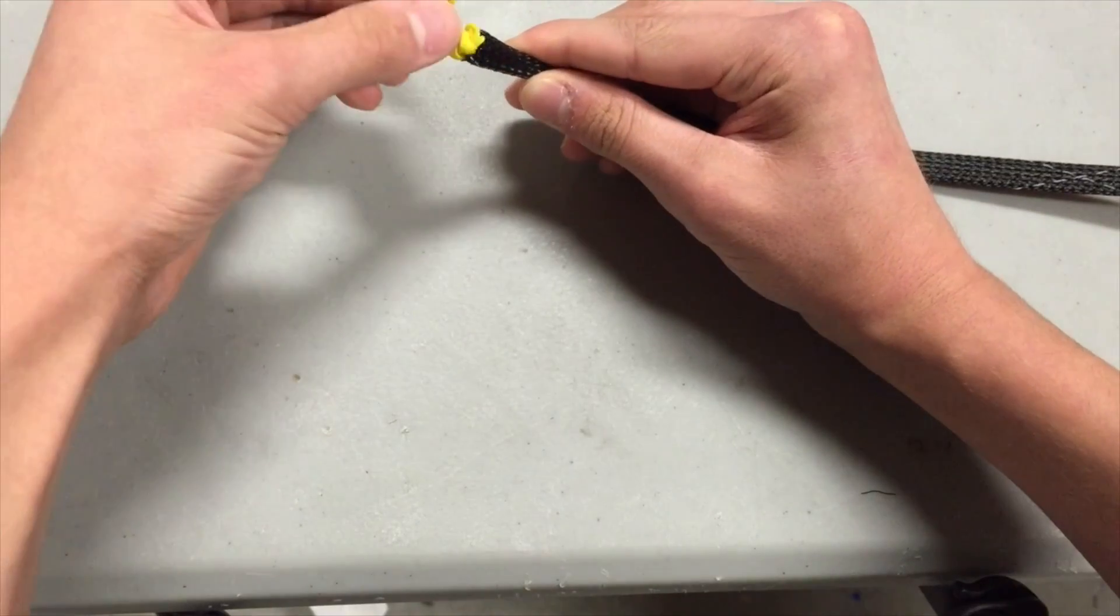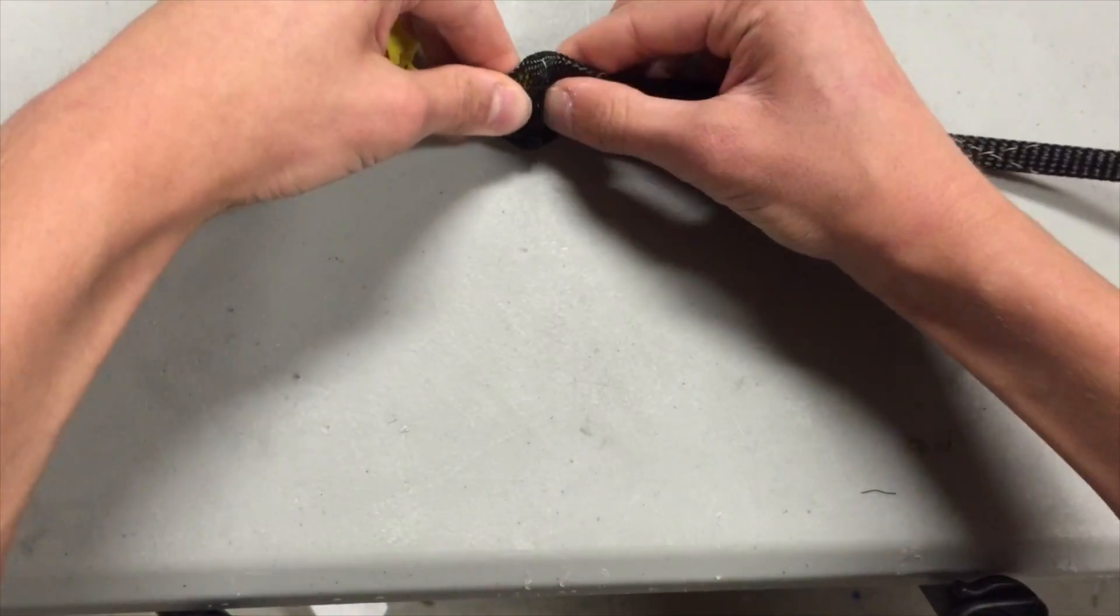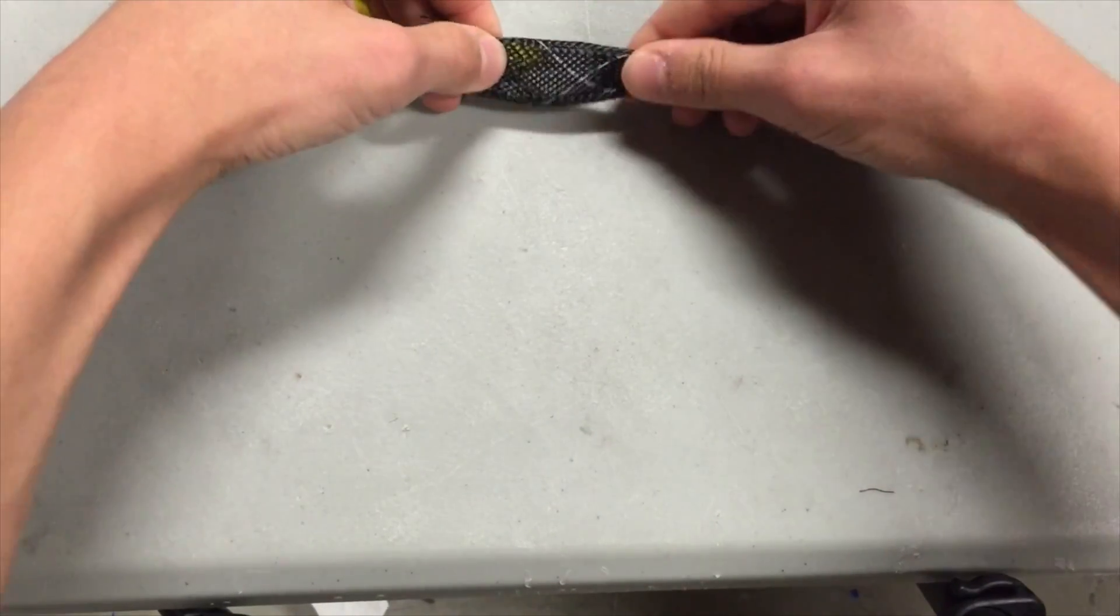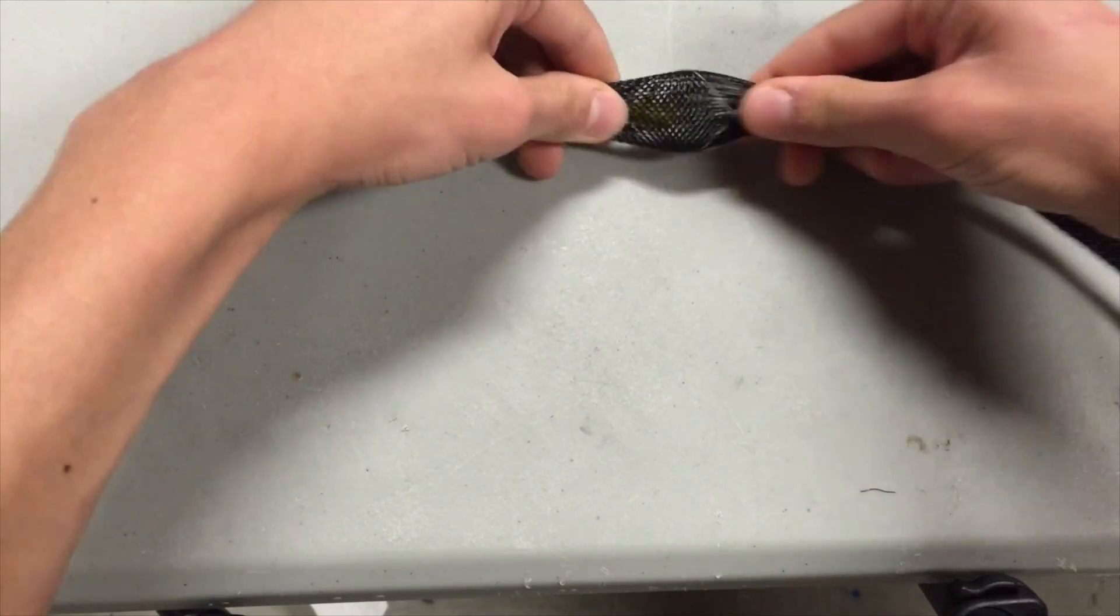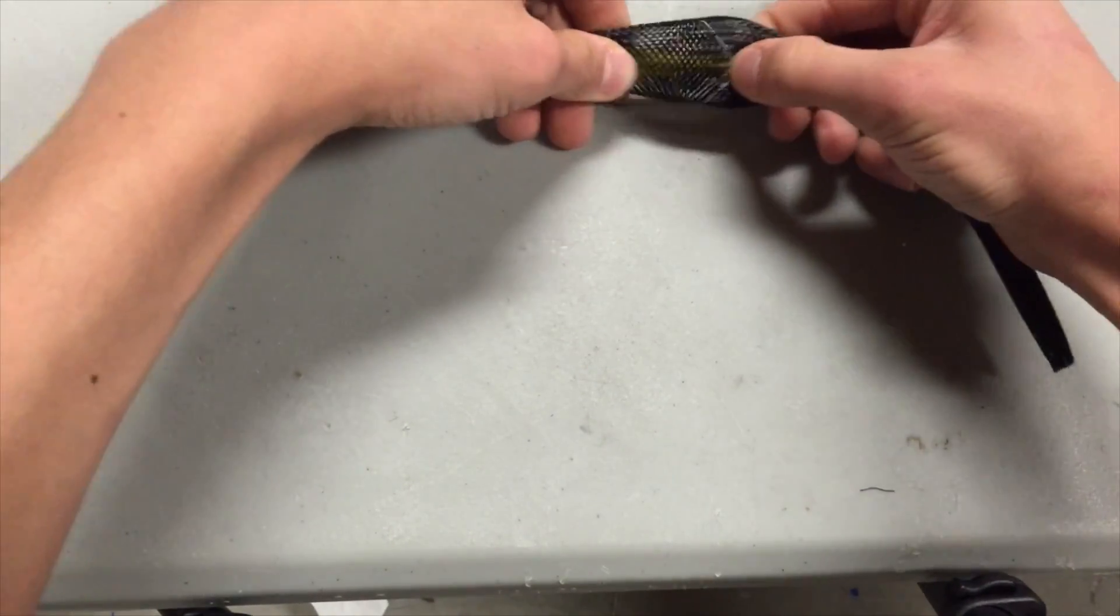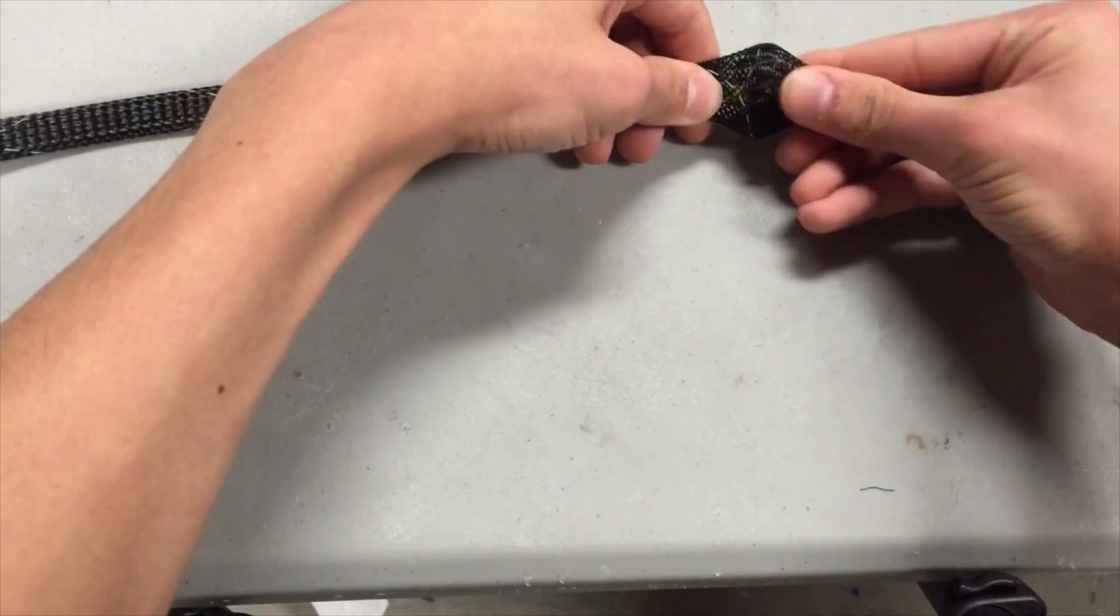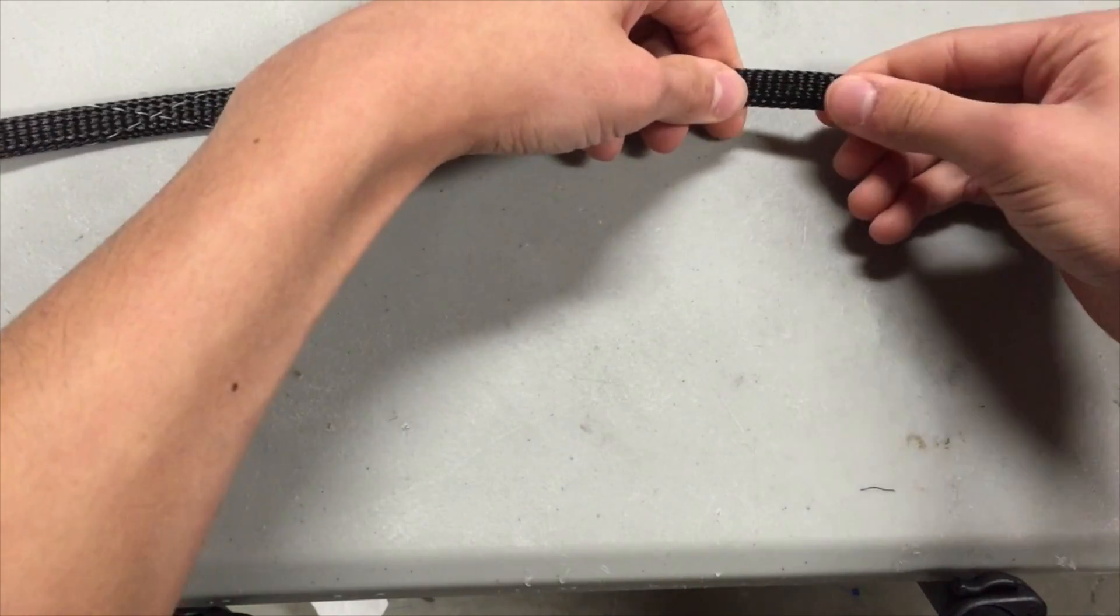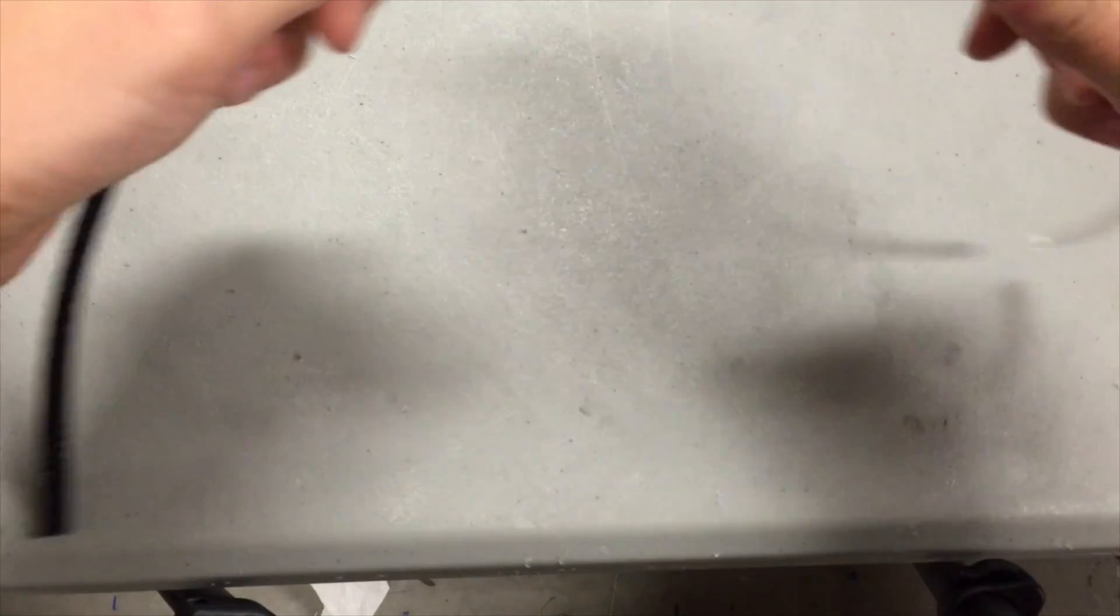Now on the other side, start feeding the balloon into the sleeving. The technique for this is hard to describe so just follow the footage. Once the balloon is fully into the sleeving, feed the tubing into the balloon.